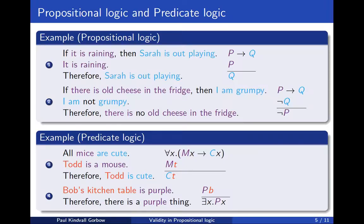So in predicate logic we have, for example, the argument that all mice are cute — this is the first premise — and the second premise is that Todd is a mouse, and then we can conclude that Todd is cute. You can see the logical form on the right. It's somehow more complicated than the logical forms that we extract in propositional logic. We also have the example of Bob's kitchen table is purple, with the conclusion that therefore there is a purple thing. But in this lecture I am focusing on propositional logic.